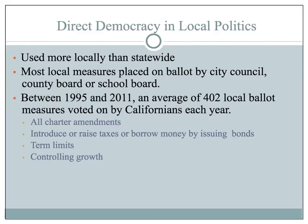Local governments use direct democracy more than it is used statewide. Local measures include introducing or raising taxes, borrowing money by issuing bonds, term limits, and controlling growth.